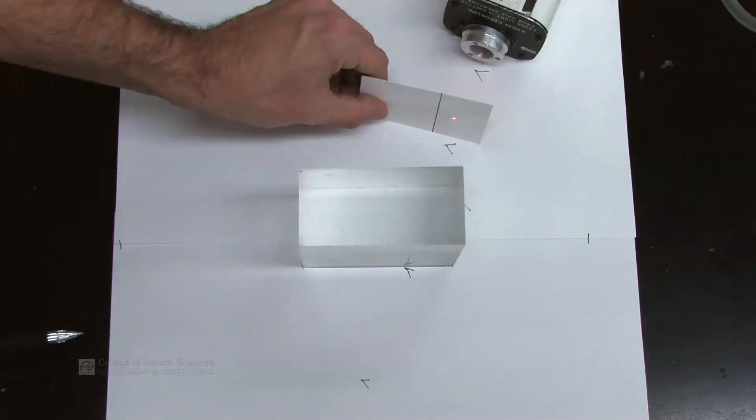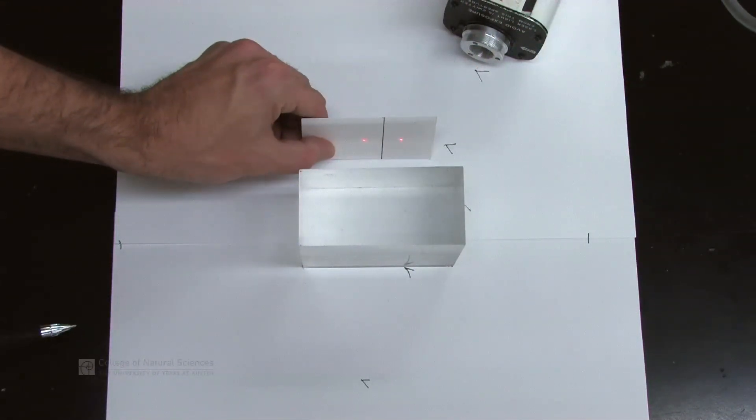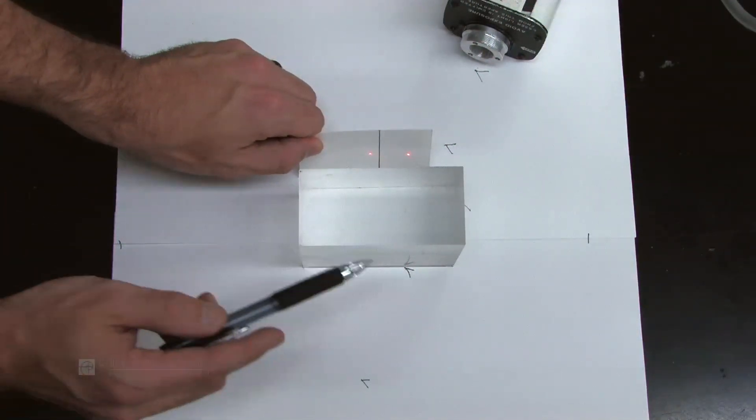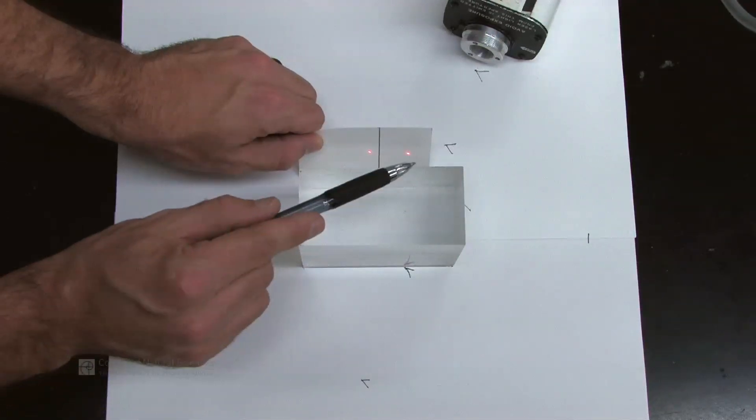If you notice over here, we've got one laser point coming in and two coming out. One of them is the reflection off the front surface and the other one is the reflection off the back surface. Front and back.